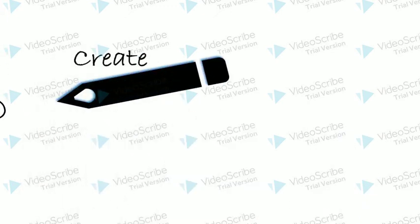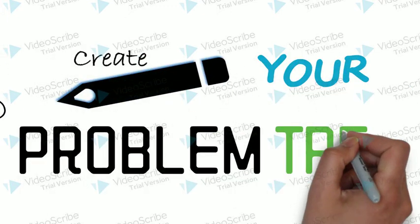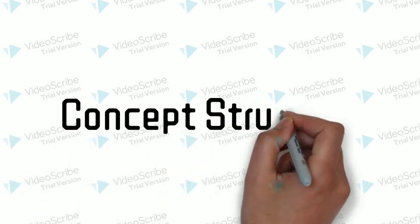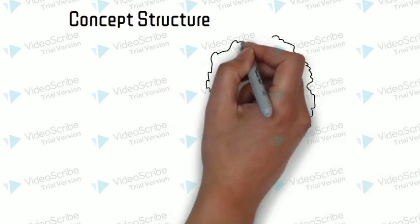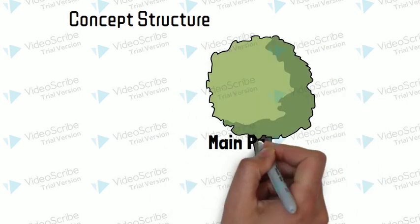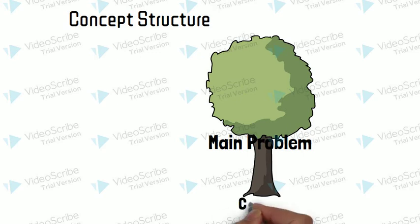So, how to create a problem tree? We shall start with the concept structure. First, we put the main problem on the trunk of the tree, the causes in its roots, and the effects on its branches.